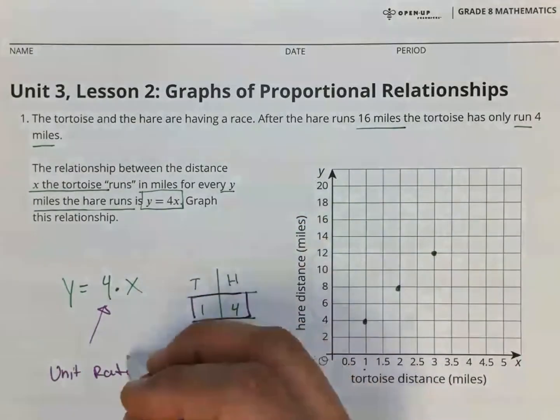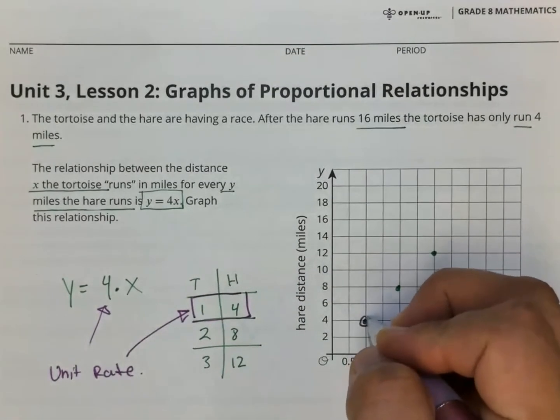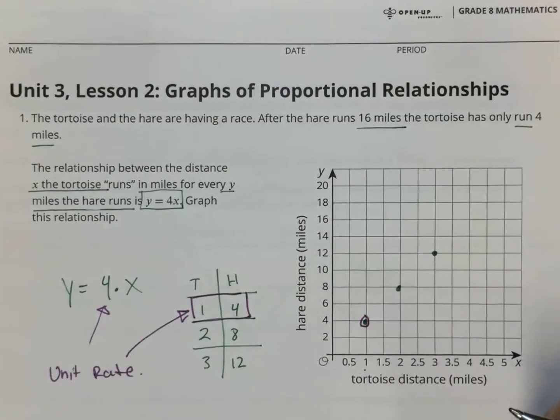This box right here is also the number there for the unit rate, this box here in the table, which is also this point here on the graph. So whatever it is for one, that's the unit rate.